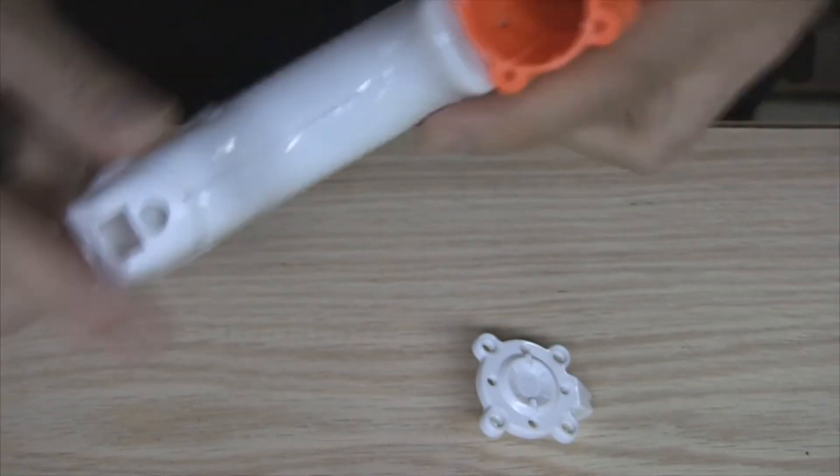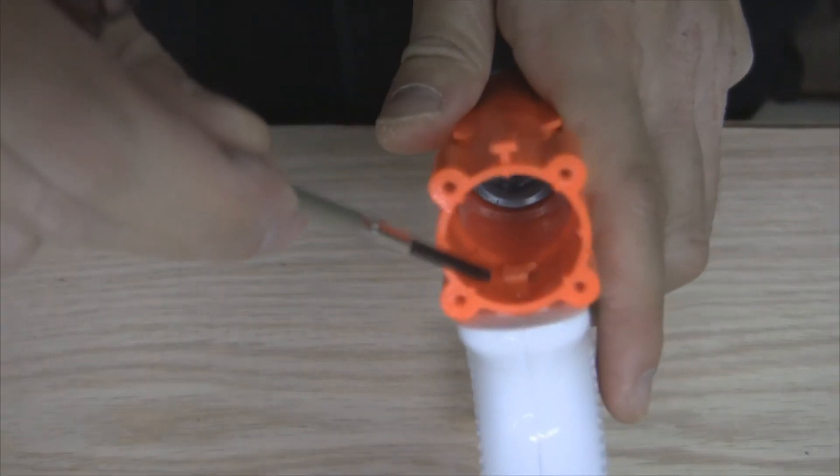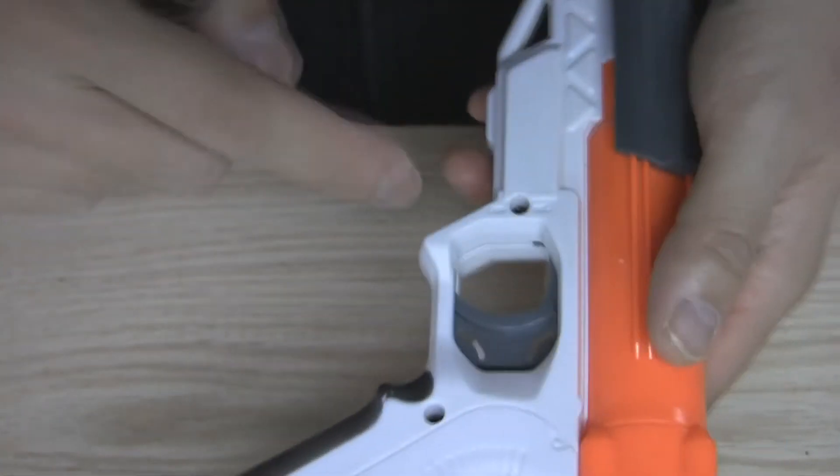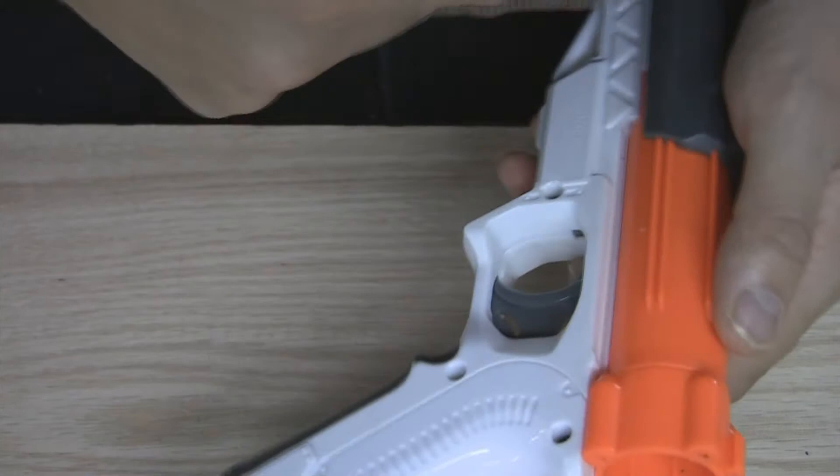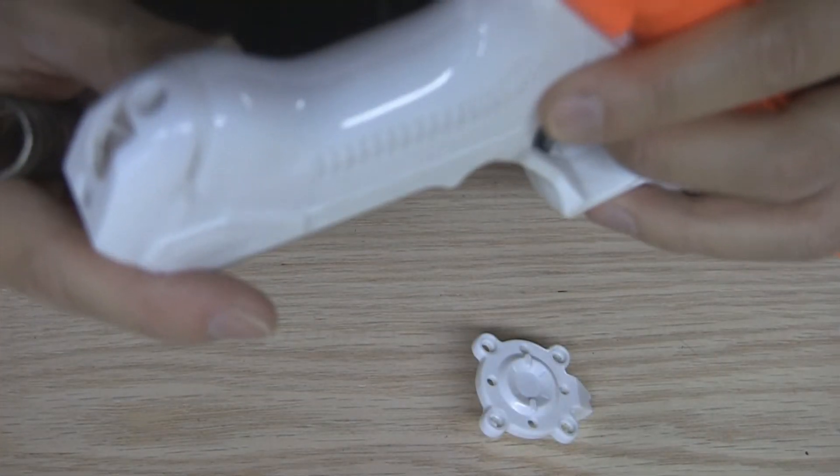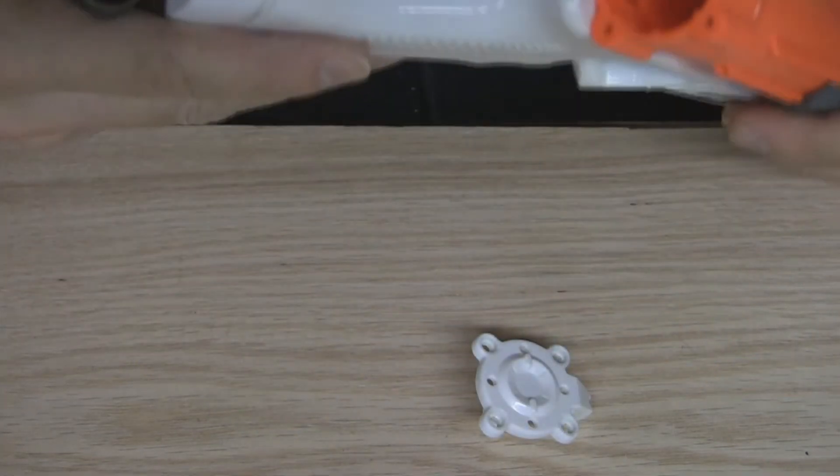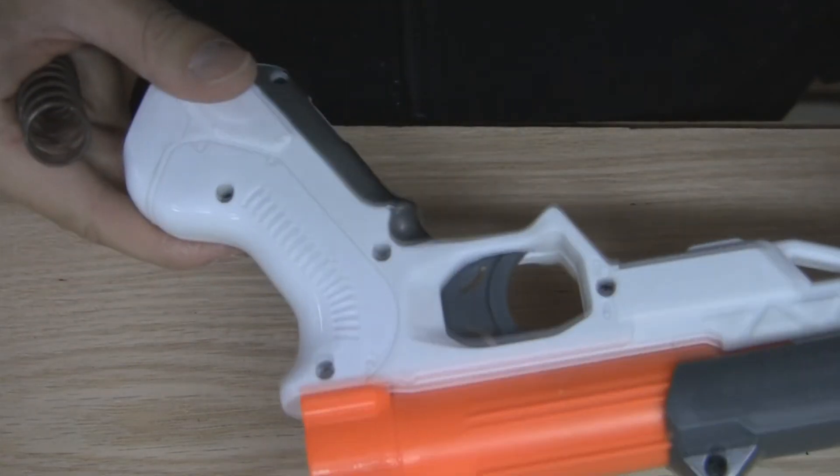So what I did was I shaved that little trigger down a tiny bit so it would be easier to pull and release the plunger. The problem with that was I took a little bit too much material out. And now it just doesn't want to prime. So basically I broke it.